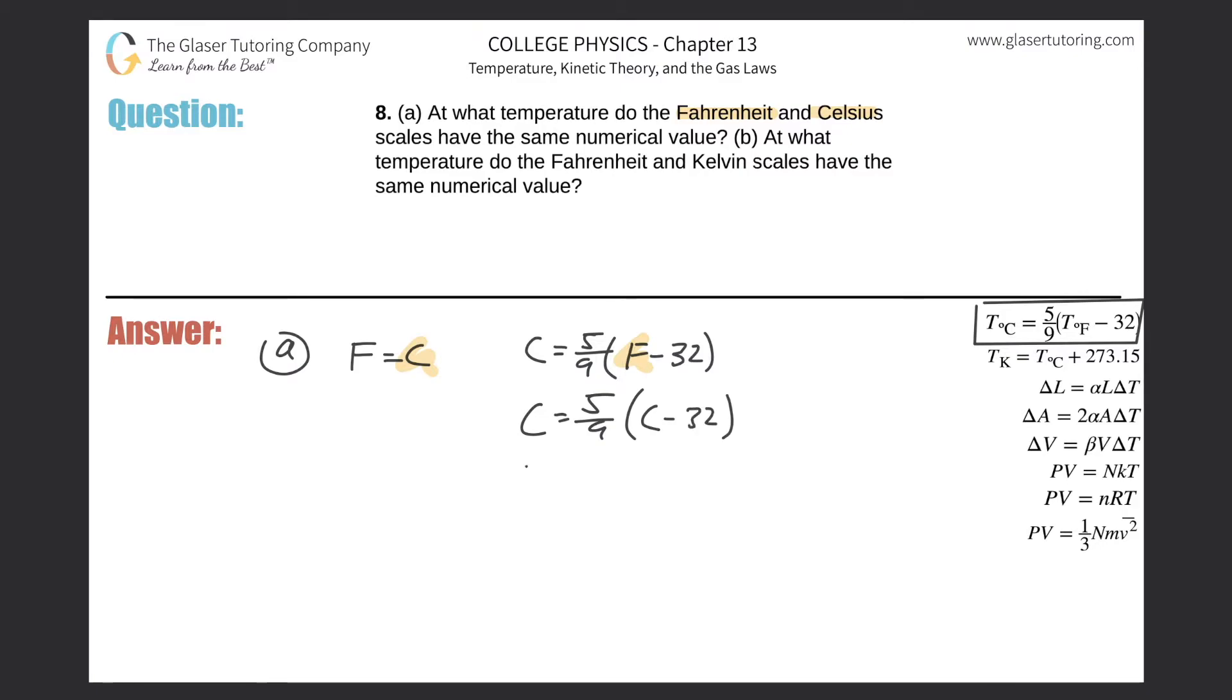So how do we do that? We'll distribute the five ninths. So we got five ninths C minus then five ninths times 32. So five ninths times 32, so it's about 17.8 or so, 17.8. And now, let's see, let's subtract this on over. Alright, so let's subtract the five ninths on over.